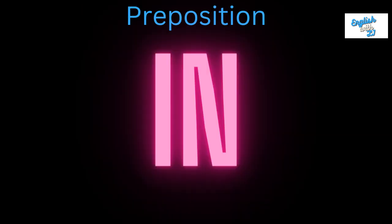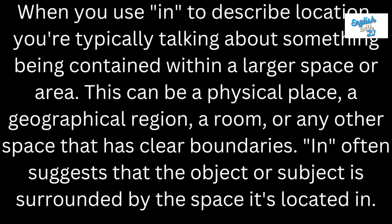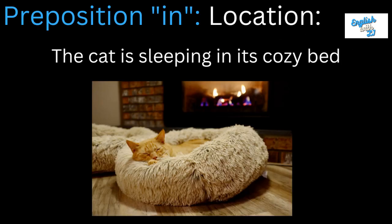So let's look at the preposition 'in.' When you use 'in' to describe location, you're typically talking about something being contained within a larger space or area. This can be a physical place, a geographical region, a room, or any other space that has clear boundaries. 'In' often suggests that the object or subject is surrounded by the space that it is located in.